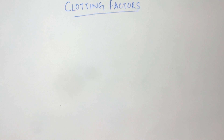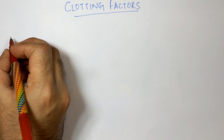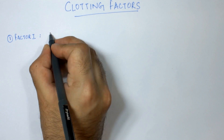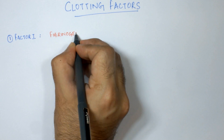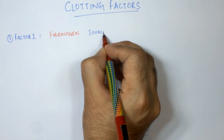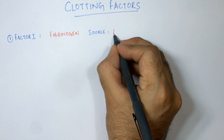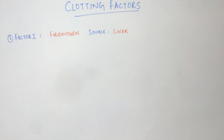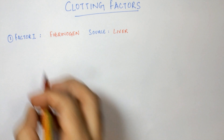Let's get started. Factor number one is fibrinogen, and the source of fibrinogen is the liver. All diseases which affect the functioning of the liver decrease the concentration of fibrinogen in the plasma, which will subsequently affect the coagulation pathways.